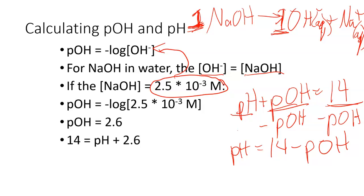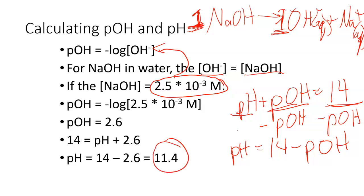Calculating that out: 14 minus 2.6 gives us 11.4. So the pH of this solution is 11.4 and the pOH is 2.6. Do be careful about that — it's very common for students to get this mixed up and report a pOH when they're supposed to report a pH, or vice versa. Make sure you're clear on which one you're working with.